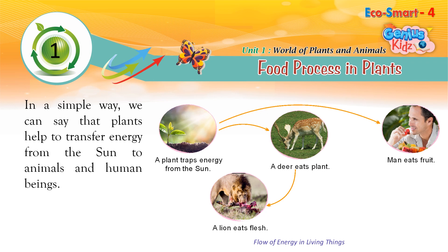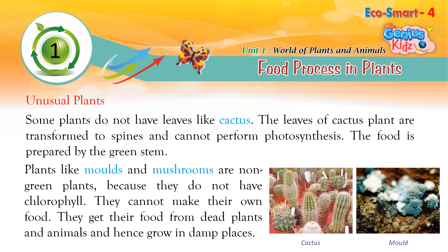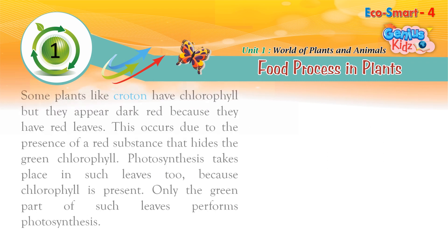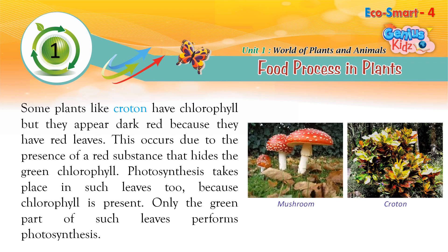In simple terms, plants help to transfer energy from the sun to animals and human beings. Some plants do not have leaves, like the cactus. The leaves of the cactus plant are transformed into spines and cannot perform photosynthesis — the food is prepared by the green stem. Plants like molds and mushrooms are non-green plants because they do not have chlorophyll; they get their food from dead plants and animals and grow in damp places. Some plants like croton have chlorophyll but appear dark red due to a red substance that hides the green chlorophyll. Photosynthesis takes place in such leaves because chlorophyll is present, but only the green parts perform photosynthesis.